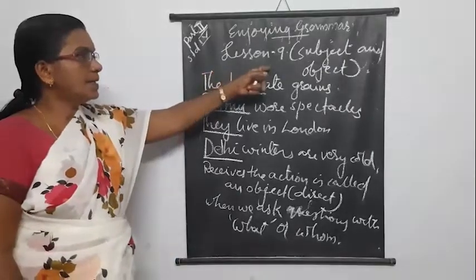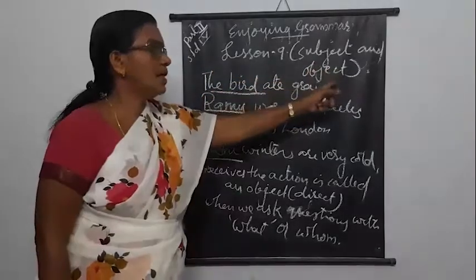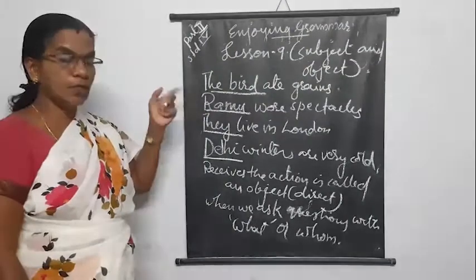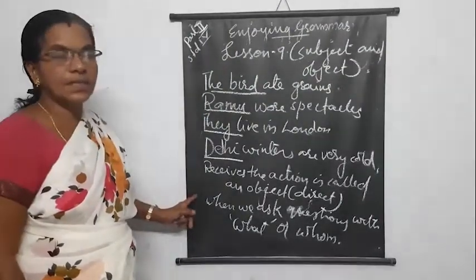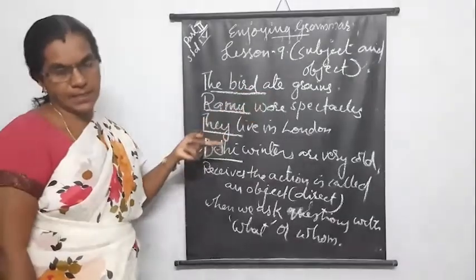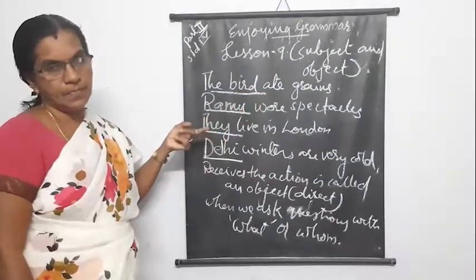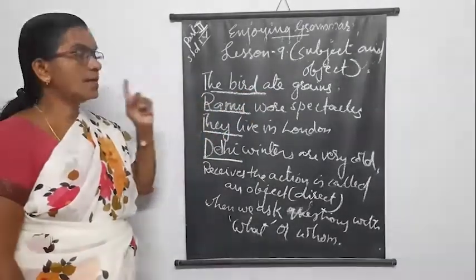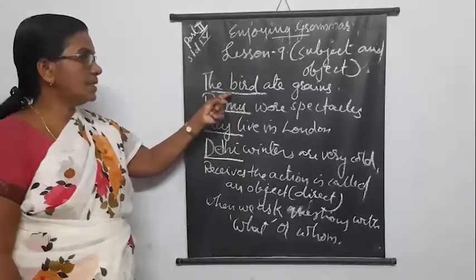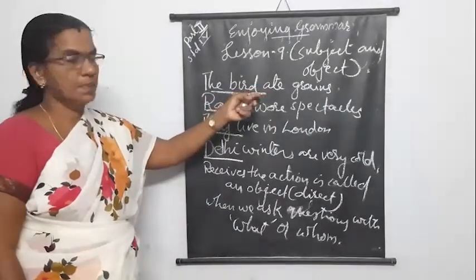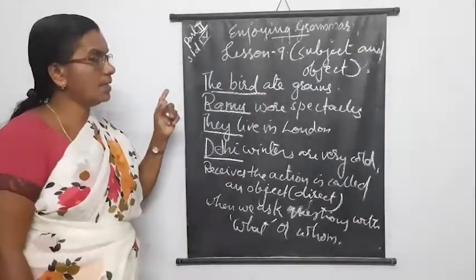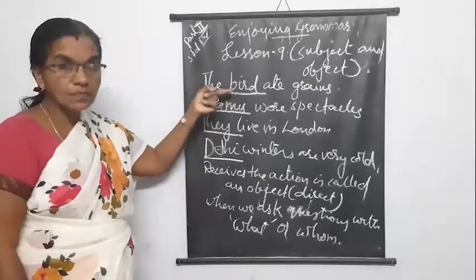Here in this lesson we want to study subject and object. Subject and object. Subject — as you know, the noun part is the subject. Object is the receiver of the action. The subject does the action, and the receiver of the action is the object.